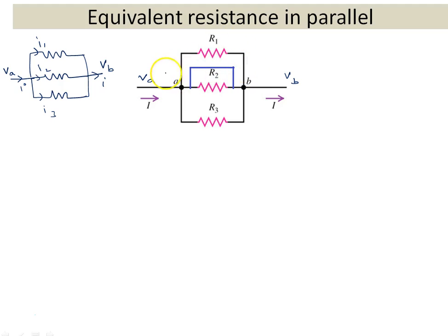If the same current I is here, I will tell you to distribute this current I in the three resistances. Think yourself and distribute the current I in these three resistances. Here, R2 is shorted — we have connected a shunt across R2.